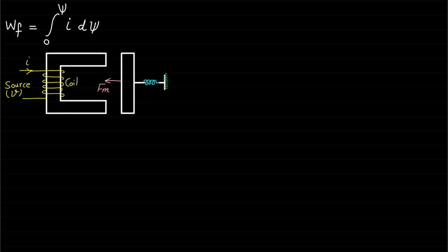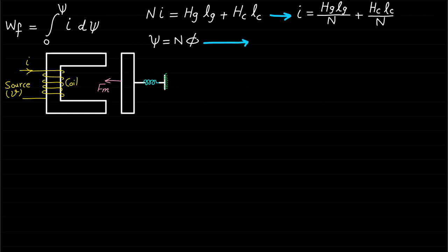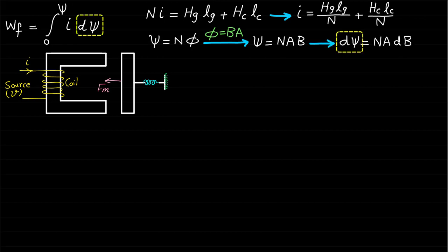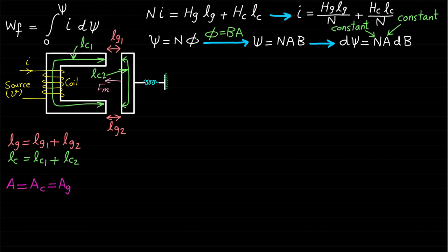The expression for the current I can be developed by applying Ampere's law to this specific relay magnetic circuit. To find an expression for dψ, we can use the formula ψ = N·φ and develop an expression for dψ. Note that the number of turns N and the cross-section area A are constant for a given magnetic circuit. Also, the total air gap length Lg equals Lg1 plus Lg2, and the magnetic core length Lc equals Lc1 plus Lc2.